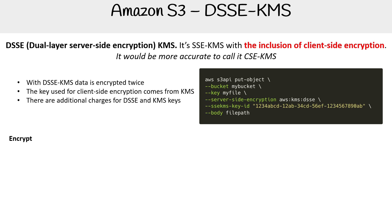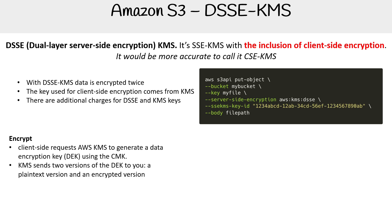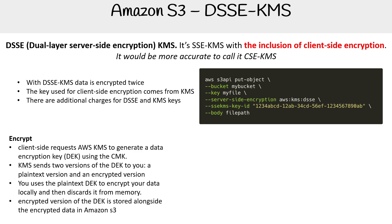Let's talk about how encrypt and decrypt works, because it's a little bit different. The idea is that the client requests AWS KMS to generate a data encryption key (DEK) using the customer managed key. KMS sends two versions of the DEK to you: a plain text version and an encrypted version. You use the plain text DEK to encrypt your data locally, and then discard it from memory. The encrypted version of the DEK is stored alongside the encrypted data in Amazon S3.